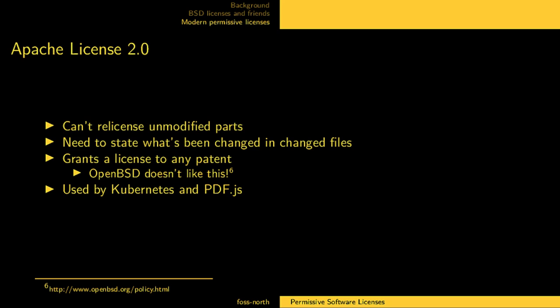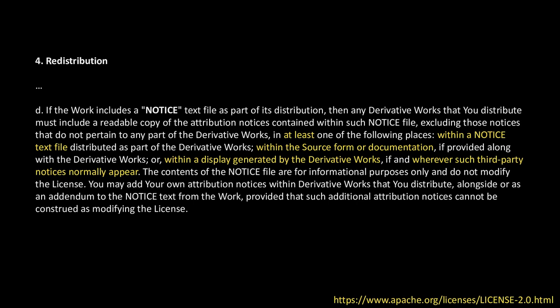There are some other permissive licenses. There is a special clause with Apache: if there is a notice file, you must include it in the distribution. This is correct — in Apache License version 2, under section 4, redistribution, subsection D, the notice file must be made available in at least one of the following: within a notice file distributed with the derivative works, within the source form or documentation, or within a display generated by the derivative works — in the UI, if it has one — wherever such third-party notices normally appear, so you can't really hide it away.